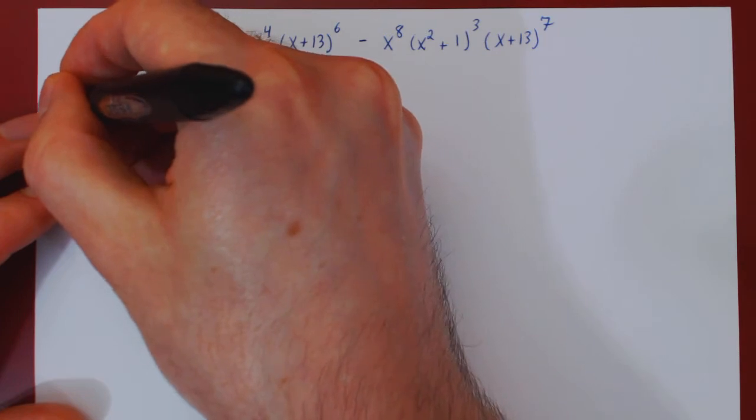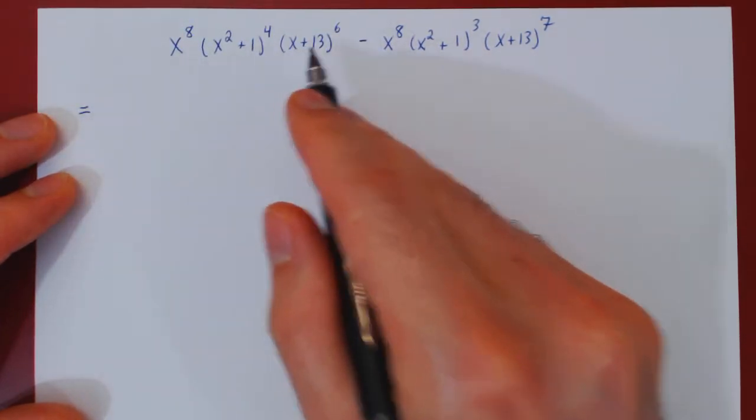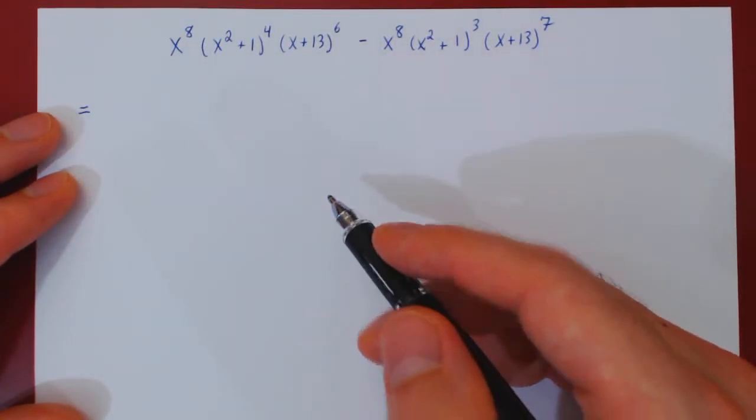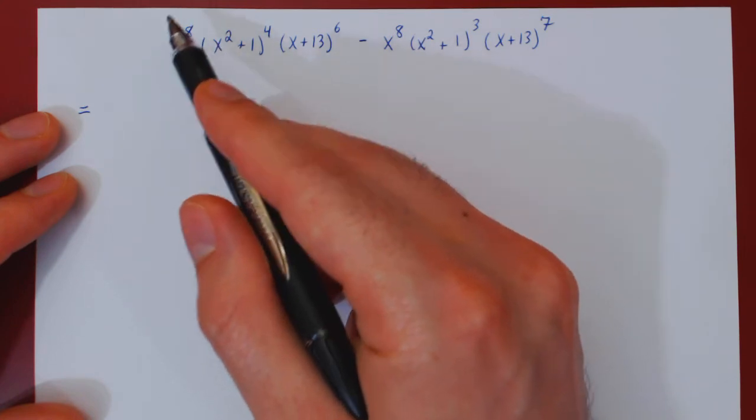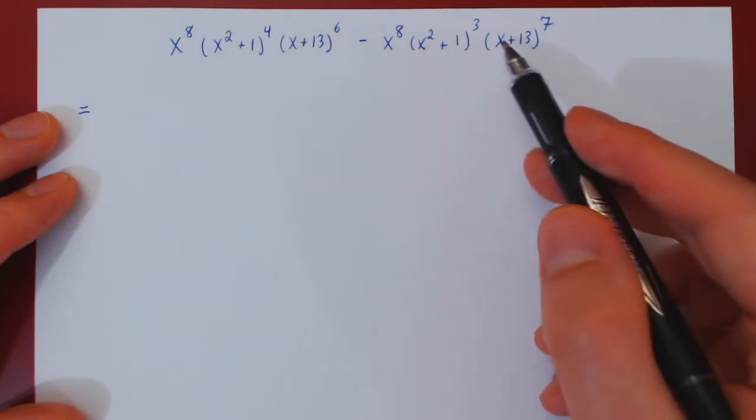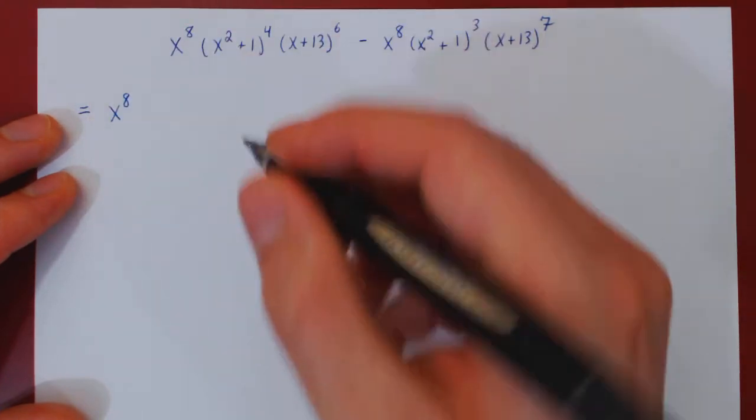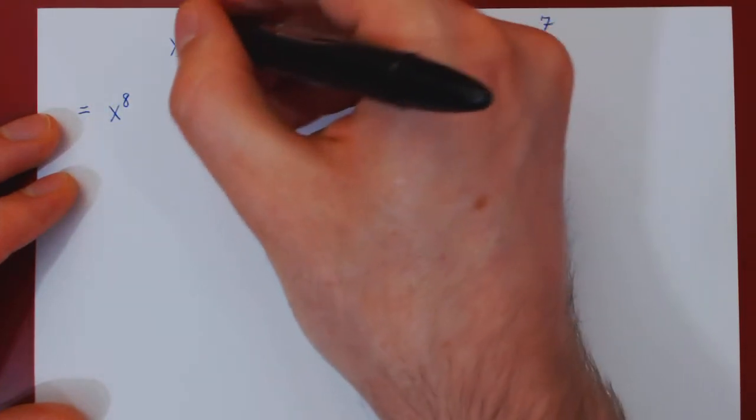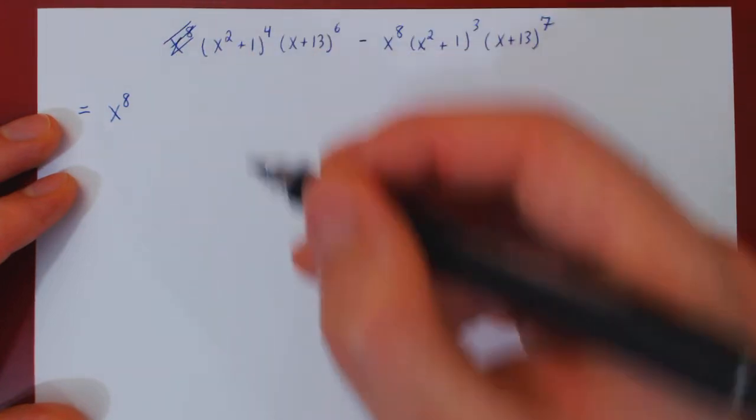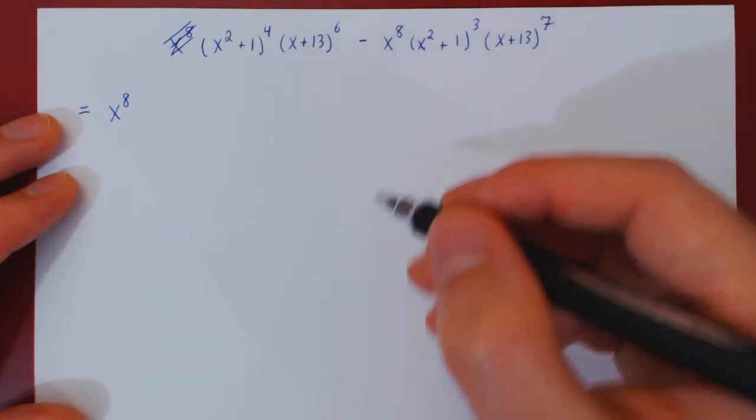So let's see if we can factor, from this difference of terms, common factors. Well, there's an obvious one: x to the 8 multiply both the first and second term, so we can factor x to the 8. And we take it away from the first term, so there's nothing left in this case. Same for the second term.